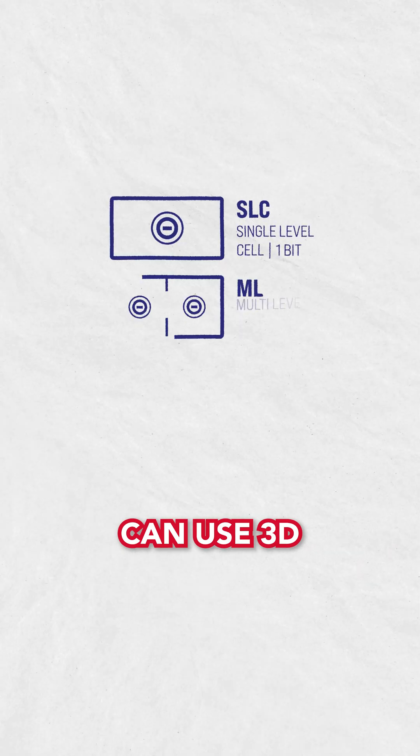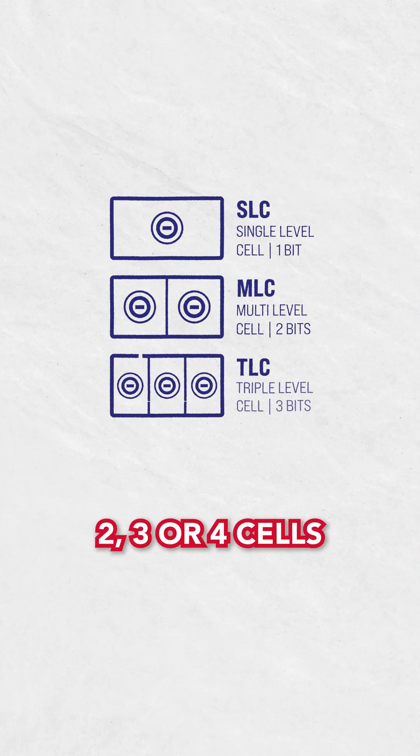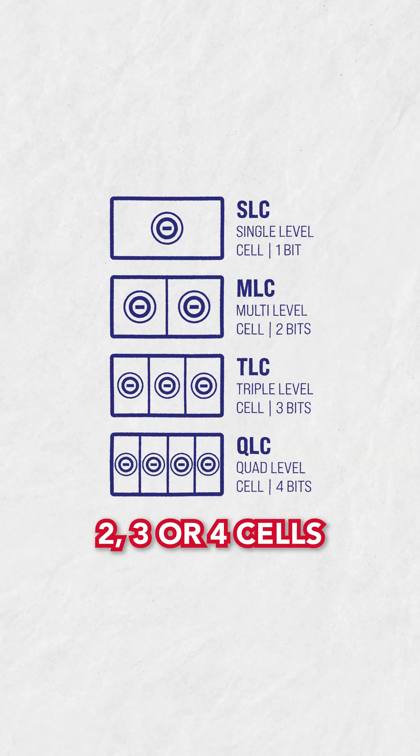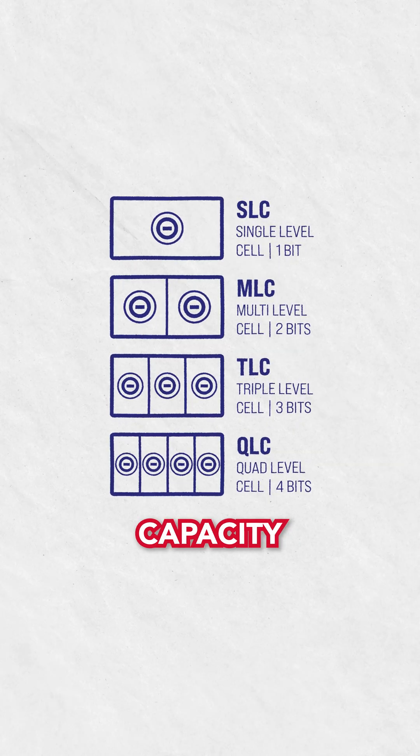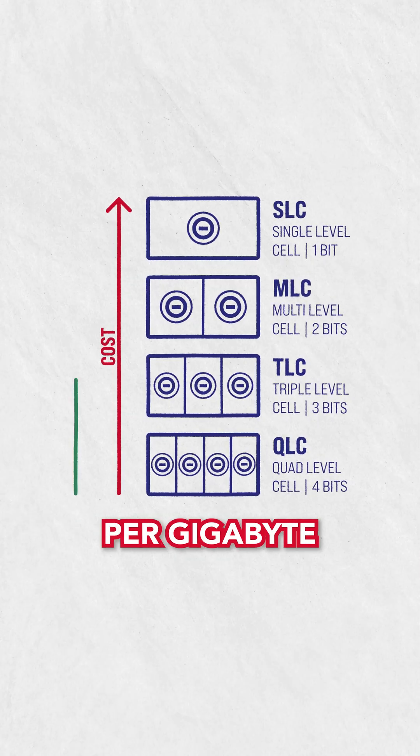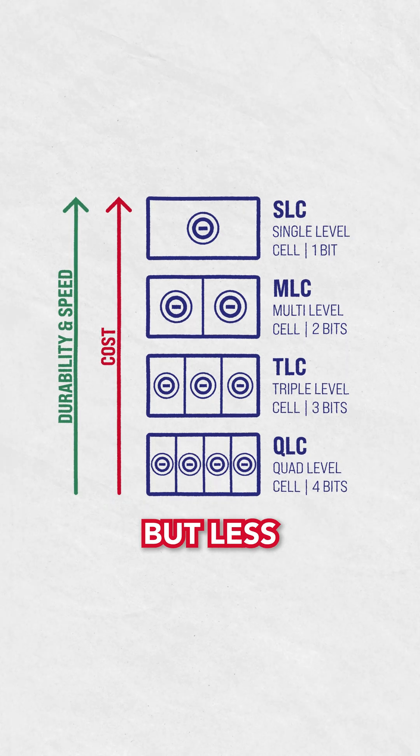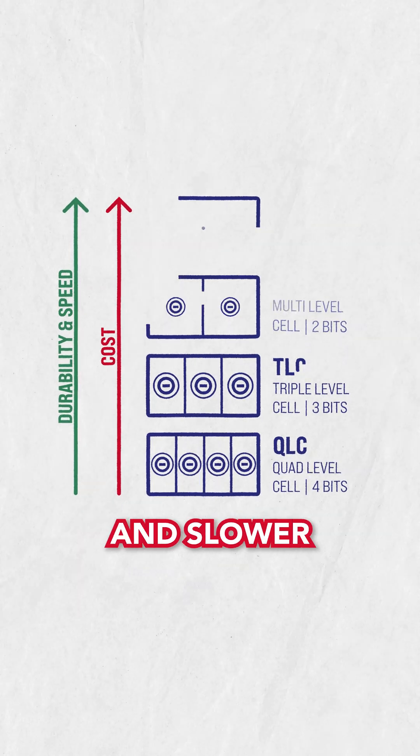SSDs can use 3D NAND, stacking 2, 3, or 4 cells to increase capacity. They are cheaper per gigabyte, but less durable and slower.